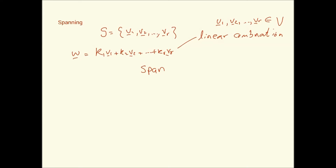We call this subspace the span of vectors v1, v2, ..., vr. All the vectors in that subspace, formed by the linear combinations of v1 to vr, are said to be spanned by those vectors — or by the set S. This is called the span of the vectors, or the span of S.